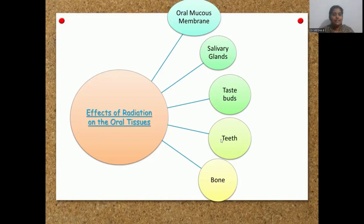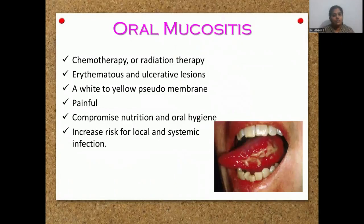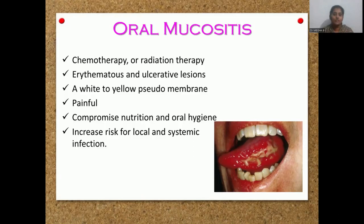Radiation affects the oral mucous membrane, salivary gland, face, pulp, teeth, and even bone. Coming to oral mucositis, the oral mucosa gets inflamed following a particular amount of radiation — that is, after one to two weeks of radiotherapy, the oral mucosa starts getting inflamed. Ulceration starts to develop. Erythematous areas are seen within the oral mucous membrane causing oral mucositis. This will compromise the nutritional intake of the patient and the oral hygiene status. It also increases the risk for local and systemic infections.